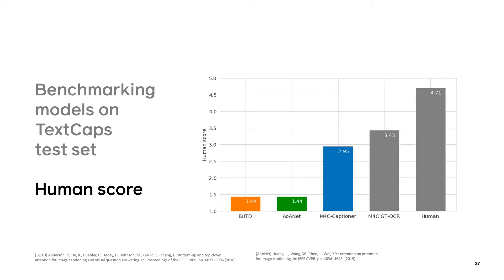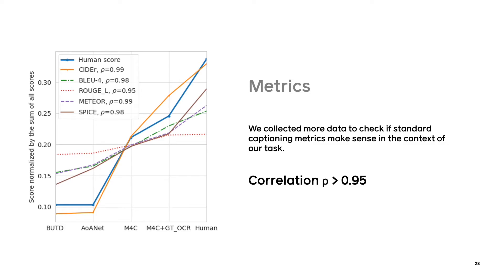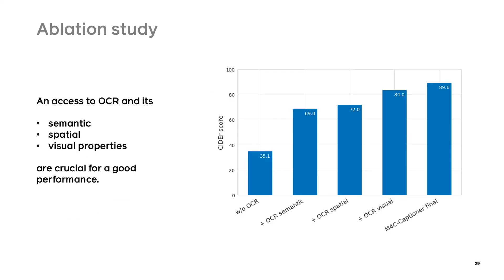Human evaluation showed the same trend. We also questioned whether standard metrics like BLEU and CIDEr are suitable for our task, since they were not designed to take into account OCR. So we performed another subjective study, and in the end we found a high correlation between values of standard metrics and human scores, with CIDEr and Meteor demonstrating the highest correlation. The ablation study showed that the ability to copy OCR tokens, as well as access to their semantic, spatial, and visual information, are crucial for good performance of the M4C model. Our final model combines all of them.